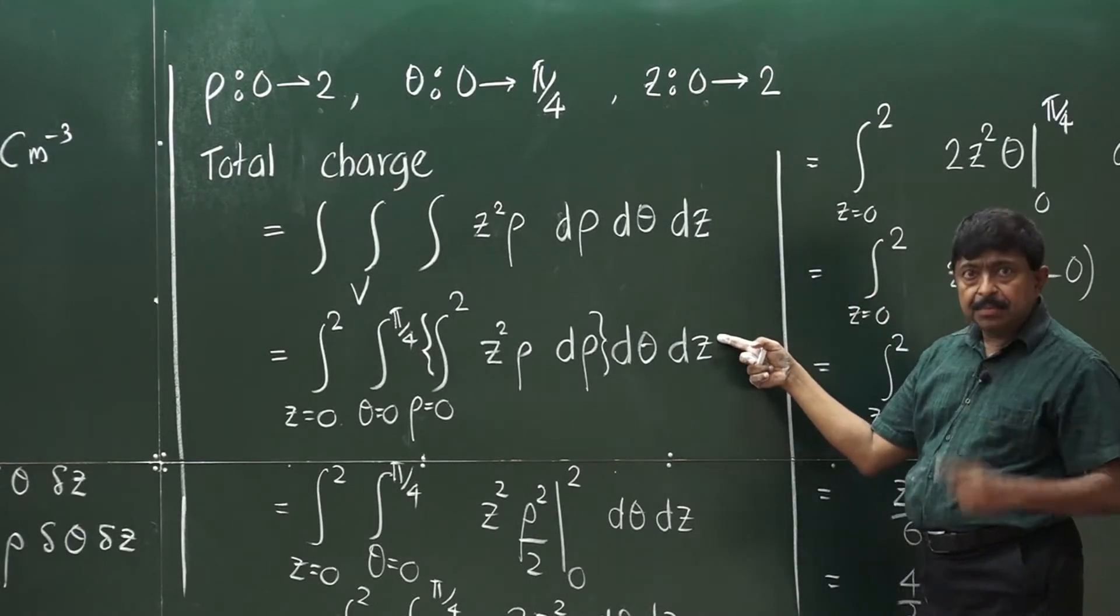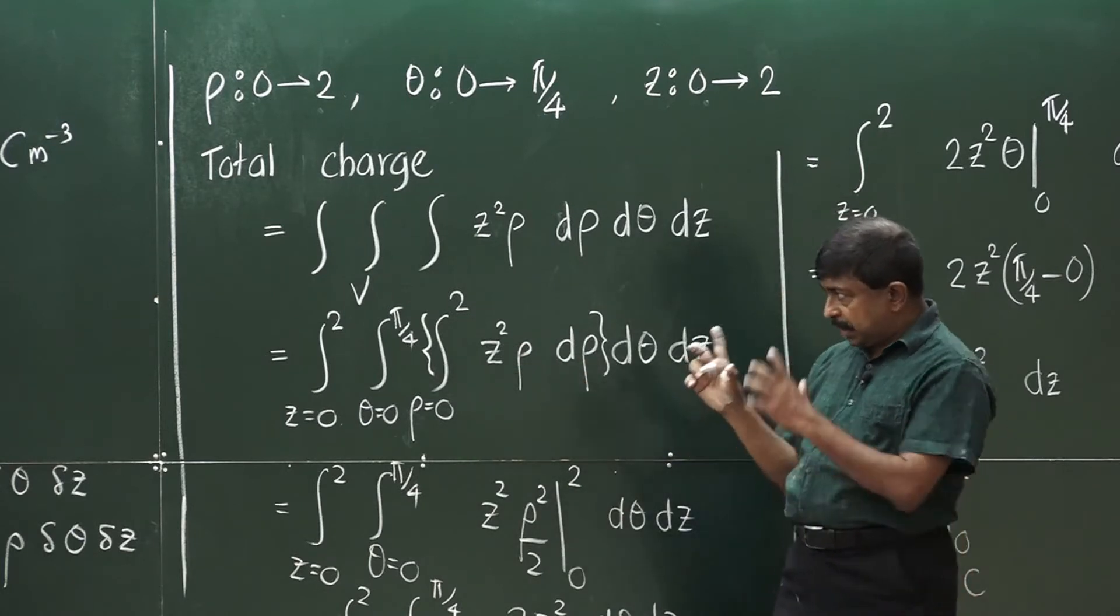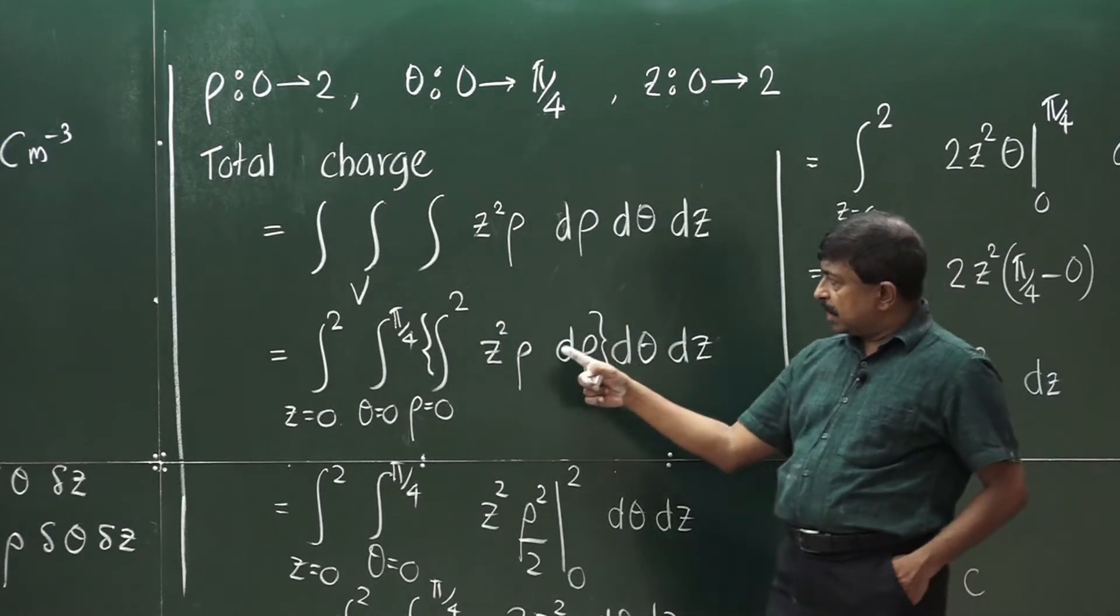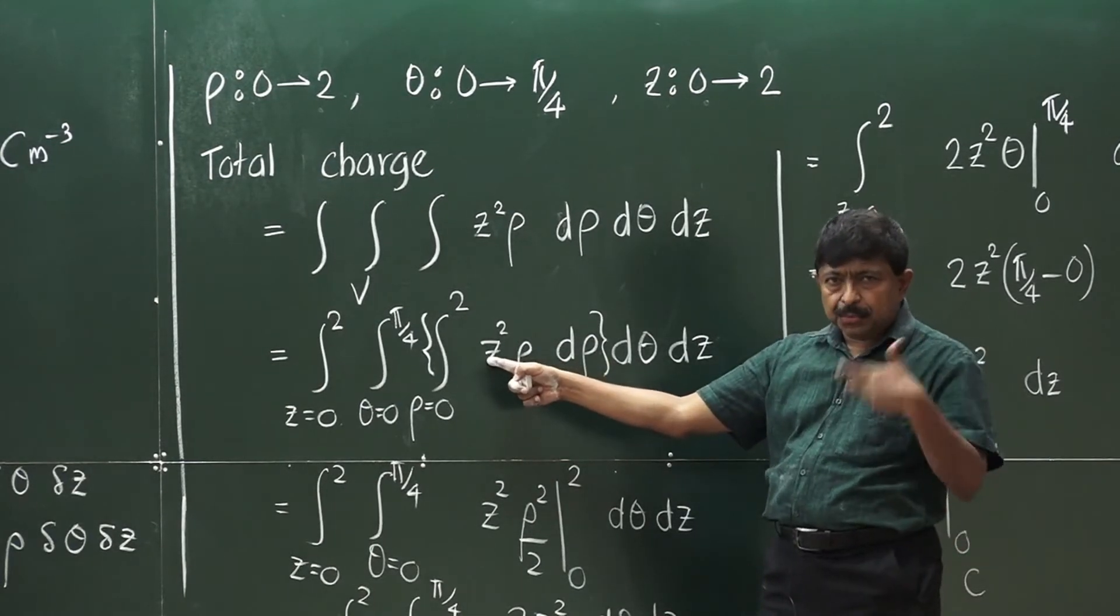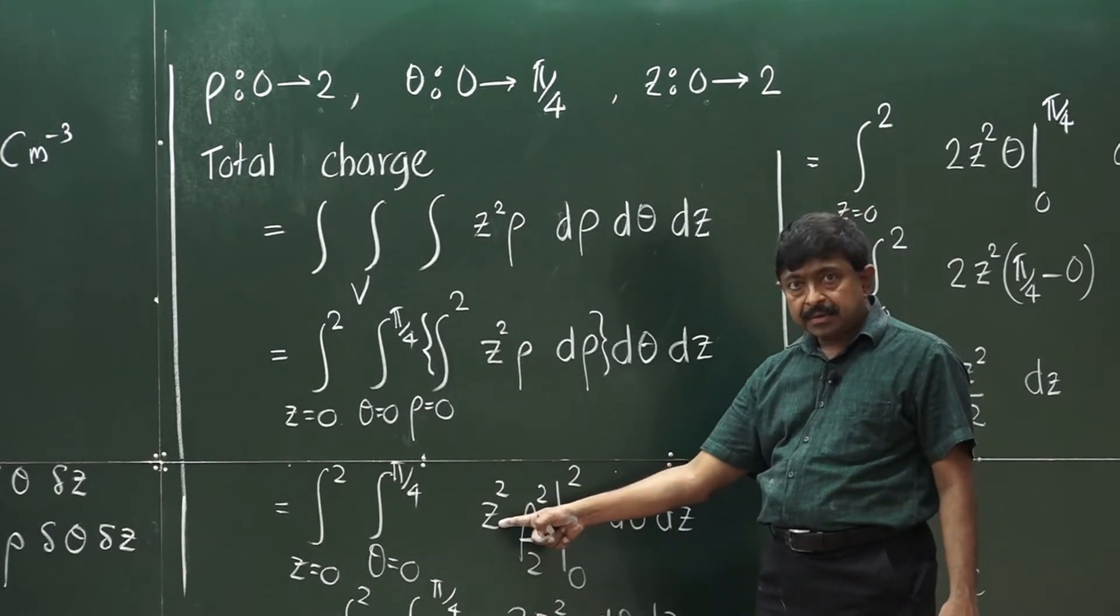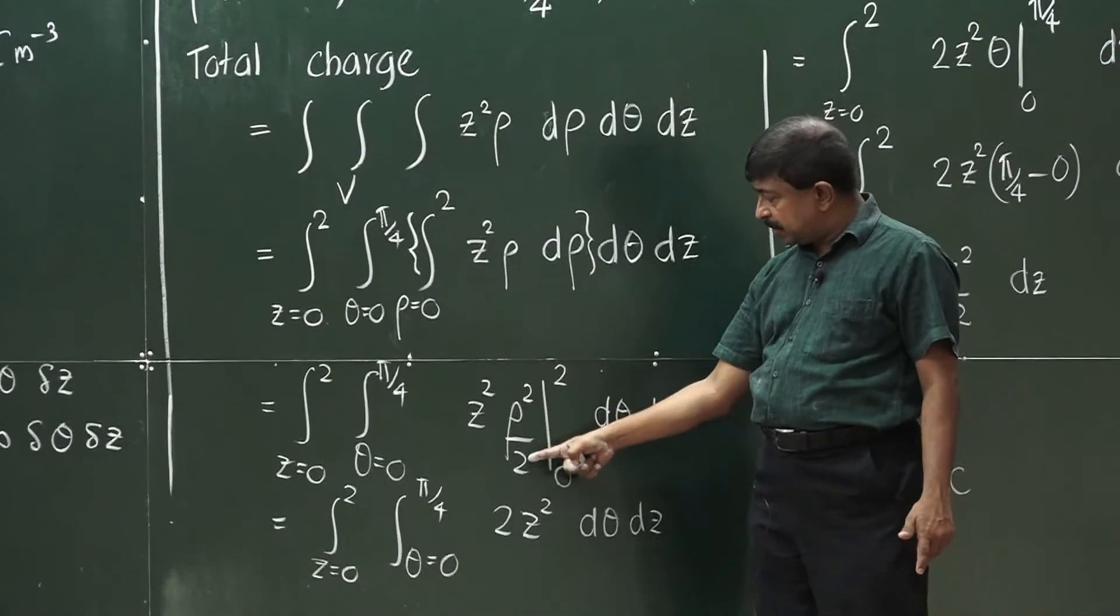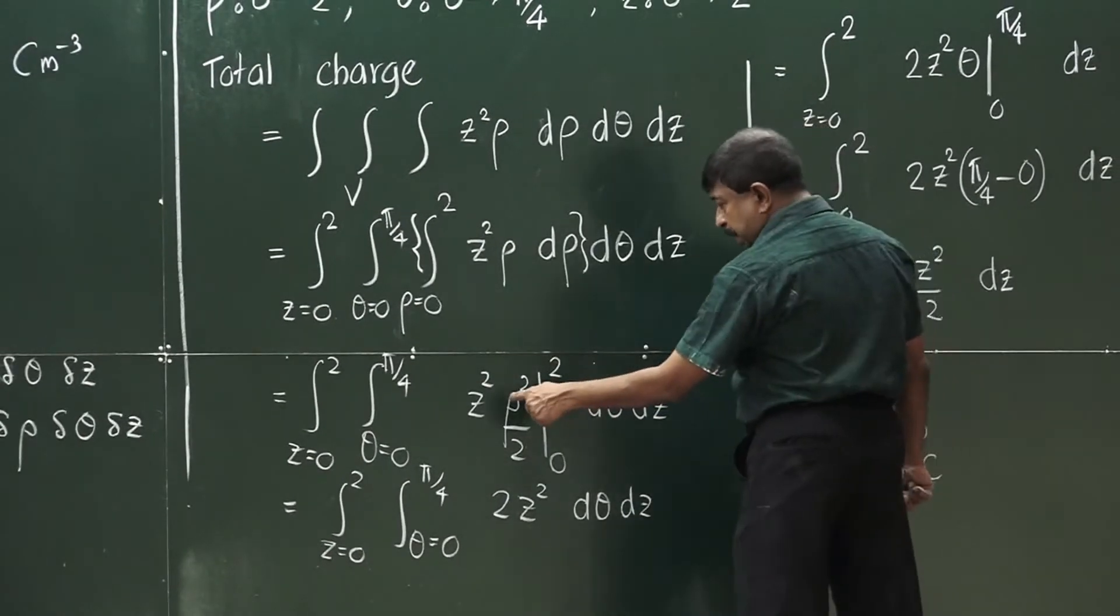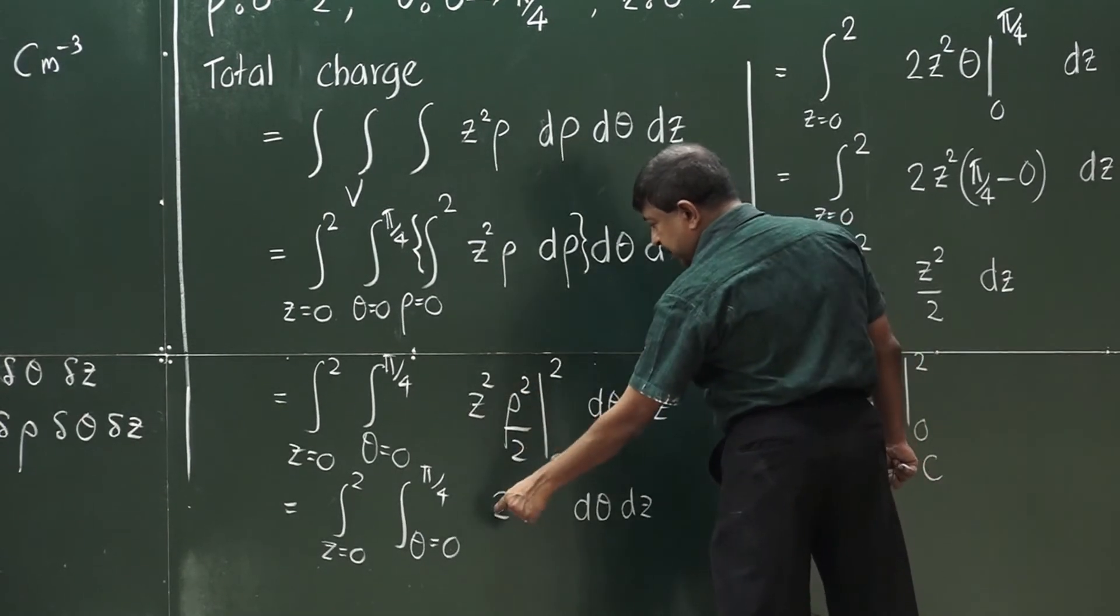For the sake of simplicity, we introduce a pair of parenthesis here so that we restrict ourselves only to this one. The variable of integration is rho. Therefore, this is the constant. This is exactly the opposite of the partial derivative. So, you keep z squared intact and rho can be integrated like this with the limits from 0 to 2. When you plug in 2 there, you get 4 over 2 which is 2. So, you get 2 z squared.